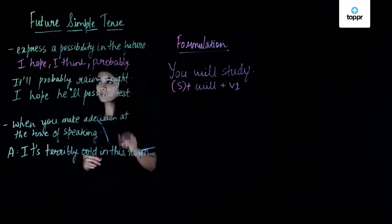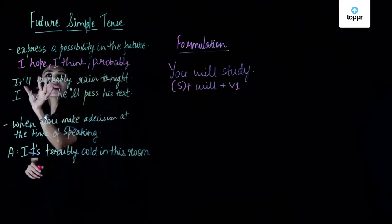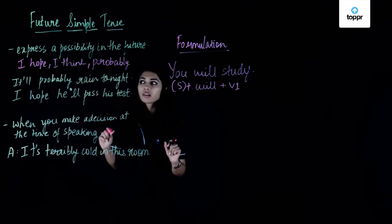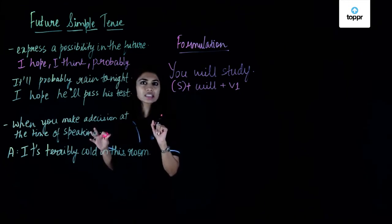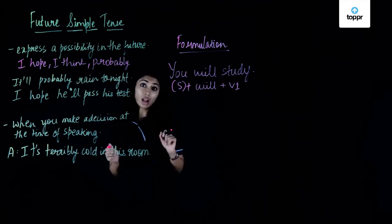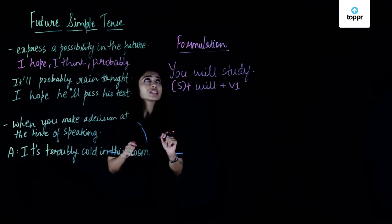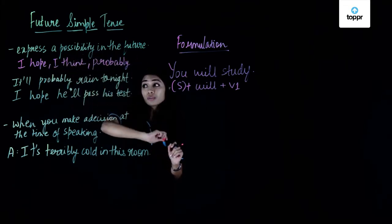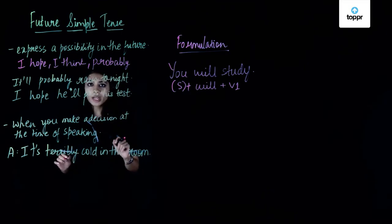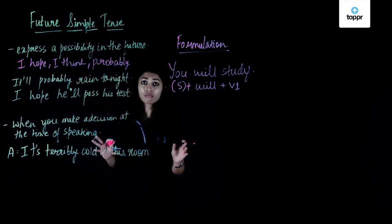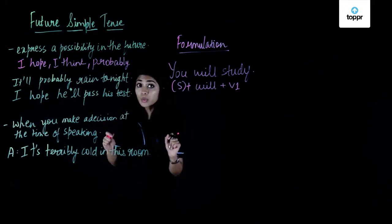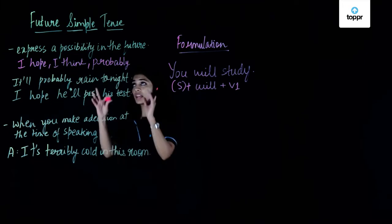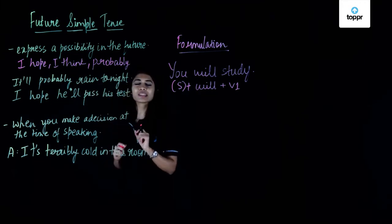Let's look at these example sentences. 'It'll probably rain tonight.' So 'it'll' is a contraction of 'will.' I'm not sure about it, but I'm predicting something — I look at the dark clouds and say, 'It will probably rain tonight.' That expresses a possibility in the future. Another example: 'I hope he'll pass his exams' — he's been working really hard, so I hope he'll pass. That's the first use of the future simple.